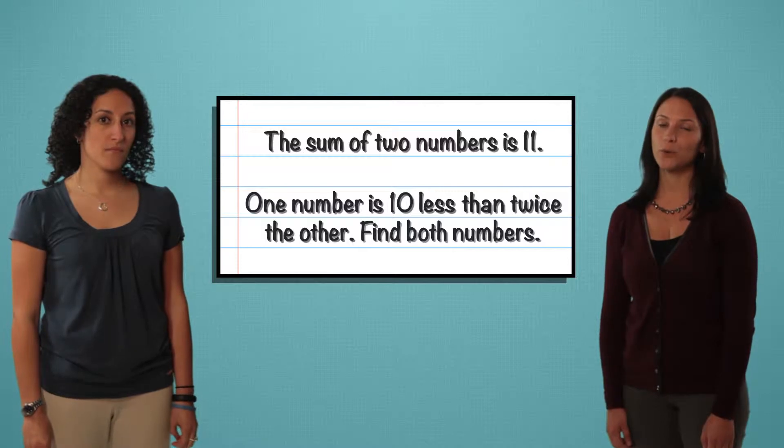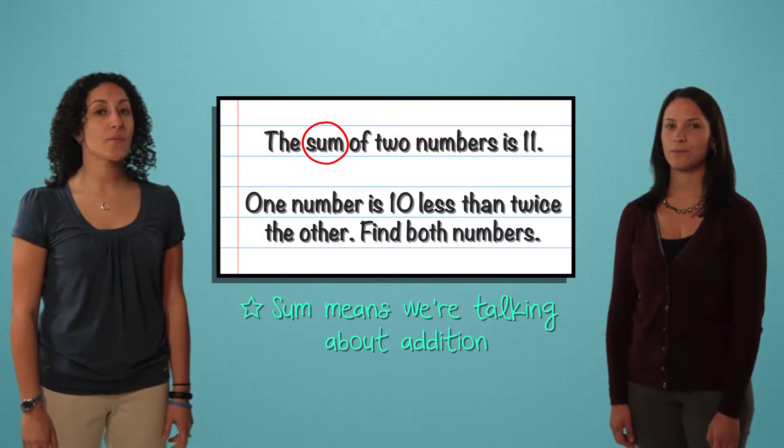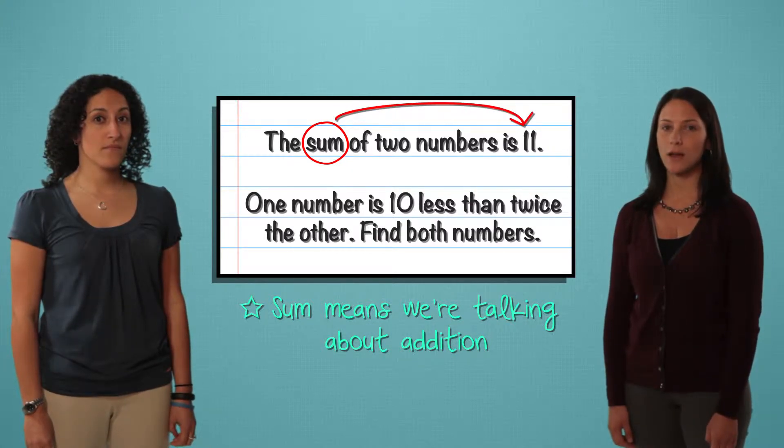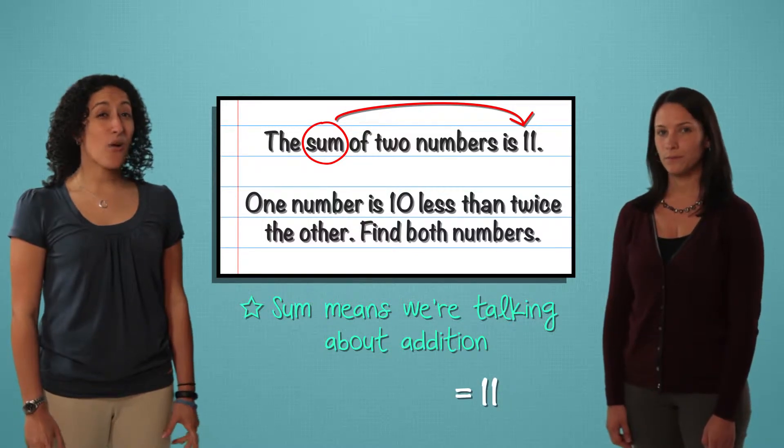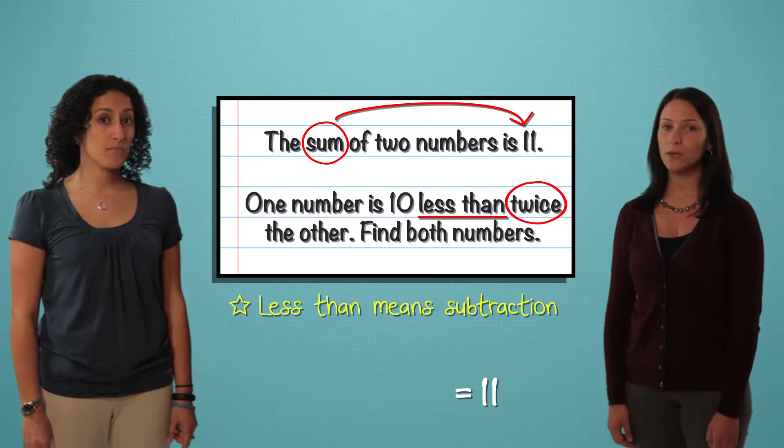Okay, first, let's circle important words. Sum. Let's circle that. That means we're talking about addition. And 11 is the sum, so that's going to be on one side of the equal sign. One number plus another number equals 11. Now, underline less than. That means subtract. And twice will mean multiply by 2.